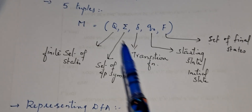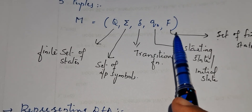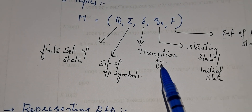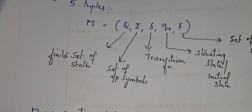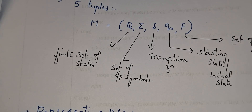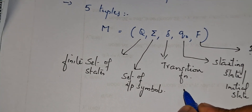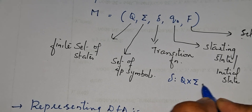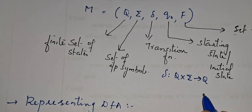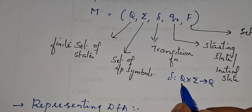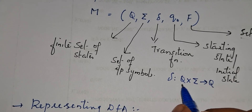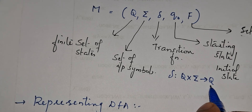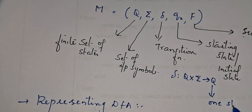Del means transition function. In DFA, NFA, and epsilon-NFA, the transition functions are different. In DFA, the transition function del is Q cross sigma equal to Q. This means any state on a particular input symbol goes to only one state.